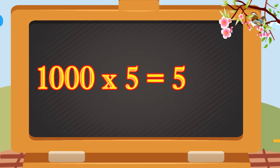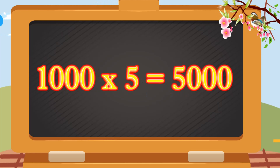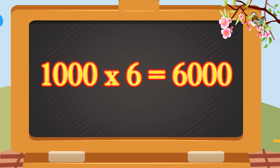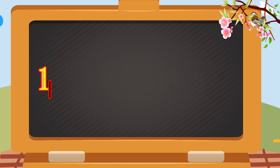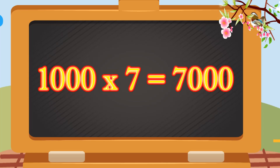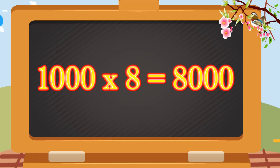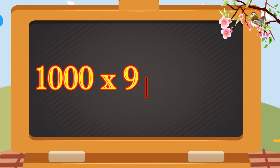1,000 fives are 5,000. 1,000 fives are 5,000. 1,000 sixes are 6,000. 1,000 sixes are 6,000. 1,000 sevens are 7,000. 1,000 eights are 8,000. 1,000 nines are 9,000.